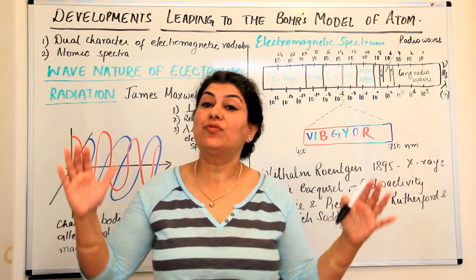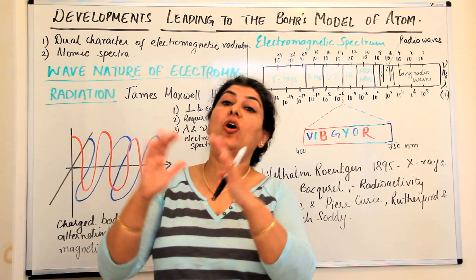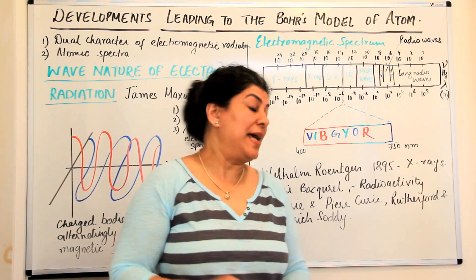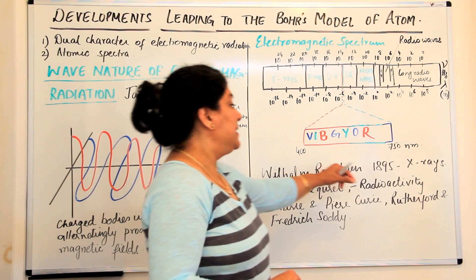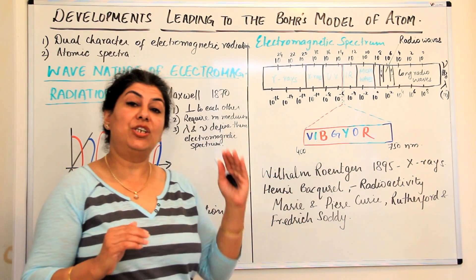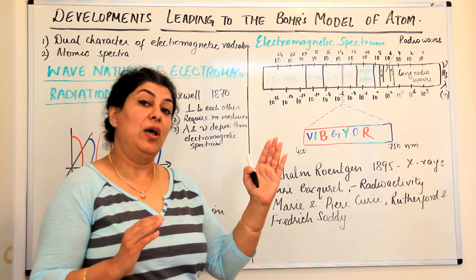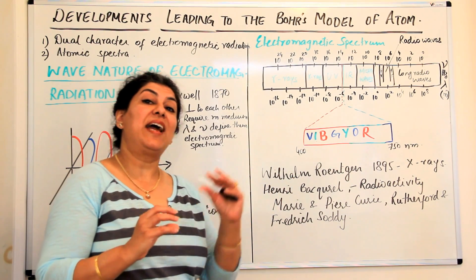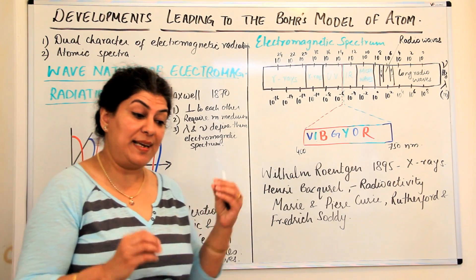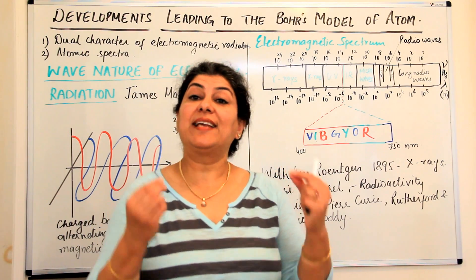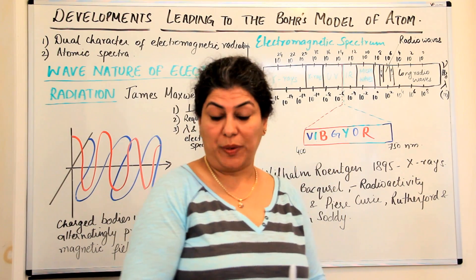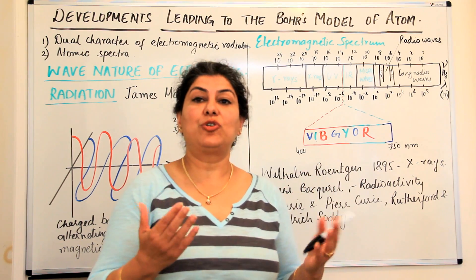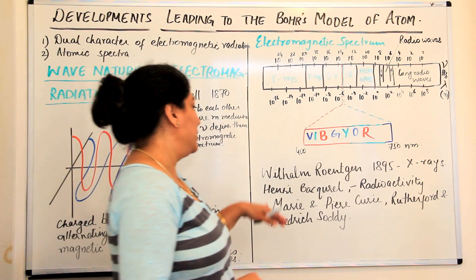There were a lot of things being discovered in the scientific world. For example, J.J. Thomson had given his model of an atom — the plum pudding model — and he carried out the cathode ray experiment, establishing the existence of negatively charged particles. Then we know about the positive proton and the neutron being discovered.